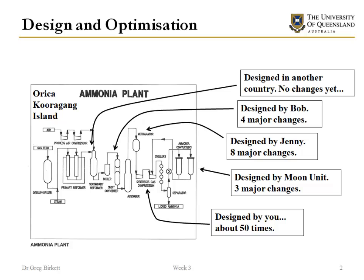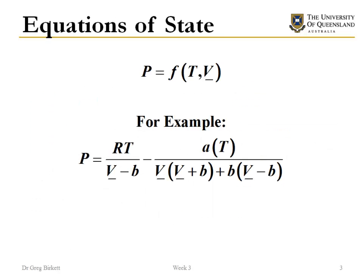As we discuss with equations of state, we need equations for the properties of things so that we're able to do things like design and optimisation — it's not feasible to use tables for these things. We commonly have equations of state, which will normally be pressure as a function of temperature and volume. An example we've looked at is the Peng-Robinson equation of state.